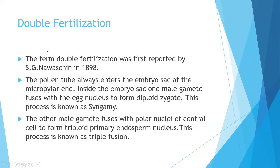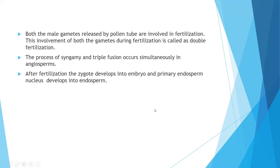The term double fertilization was first reported by H.G. Navashin in 1898. During double fertilization, the pollen tube always enters the embryo sac at the micropylar end. Inside the embryo sac, one male gamete fuses with the egg nucleus to form the diploid zygote — this process is known as syngamy. The other male gamete fuses with the polar nuclei of the central cell to form the triploid primary endosperm nucleus, which is known as triple fusion. This is about double fertilization and triple fusion.